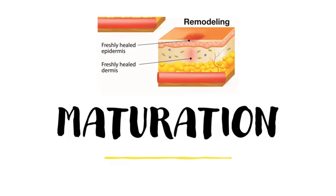To sum up the wound healing process: the wound is cleaned up during the inflammation phase, the clot is replaced with granulated tissue during the proliferation phase, and the wound is closed and sealed during the maturation phase. That is the end of my presentation. Thank you.